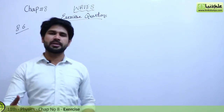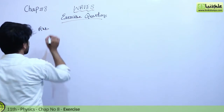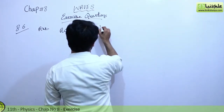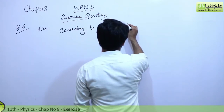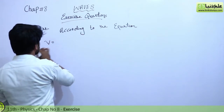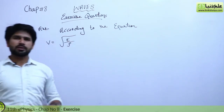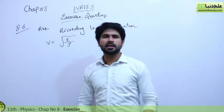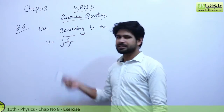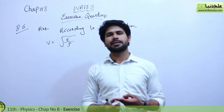Sound travels faster in solids compared to gases according to the equation for speed: V equals the square root of E over rho, where E is the elasticity modulus and rho is the density of the matter.